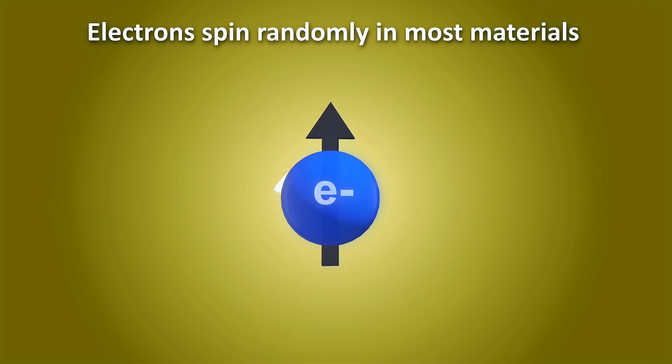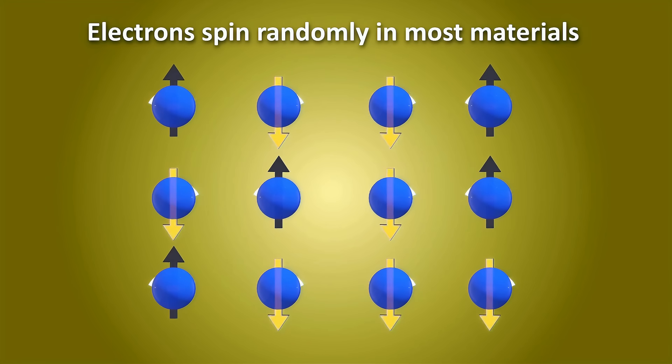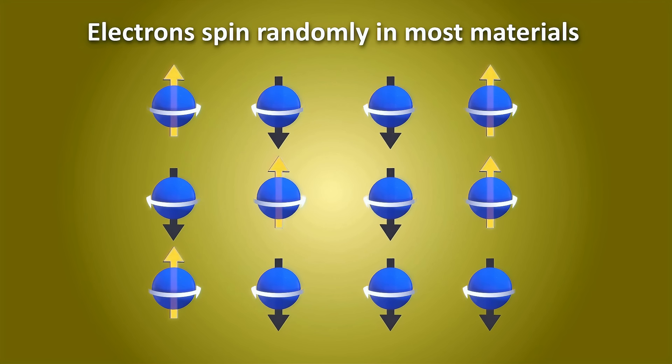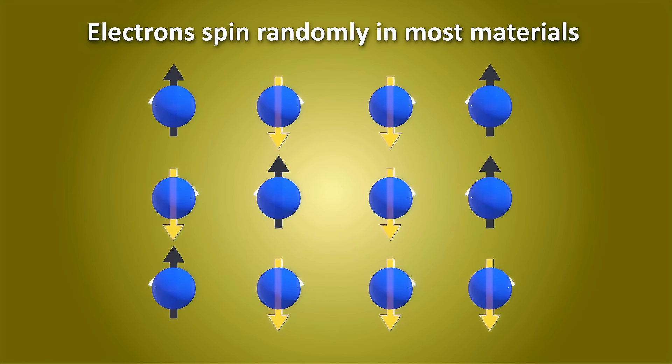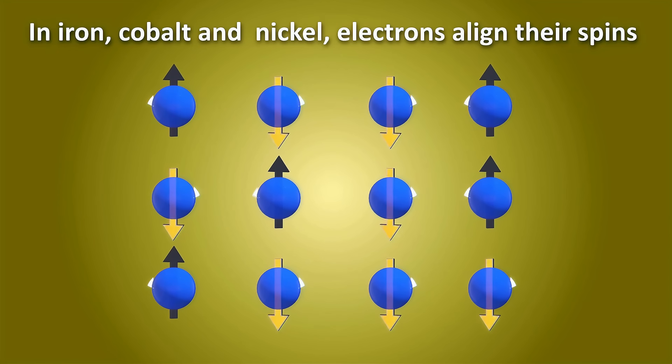Now most materials have electrons spinning randomly, in all sorts of directions. So their magnetic fields cancel each other out, resulting in no overall magnetism. But in certain materials like iron, cobalt, or nickel, something special happens.